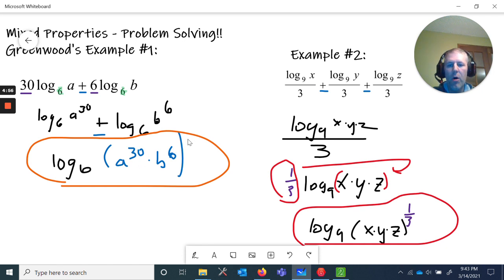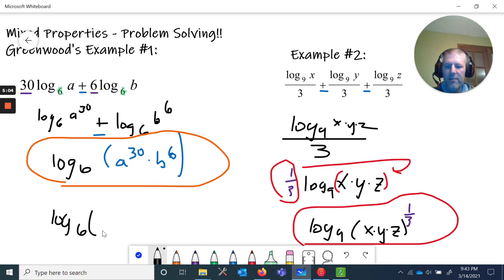We could even go farther and say we could pull a six out of here and a six here. We could say a to the fifth b all to the sixth power. That would totally work also. I know that six goes into thirty five times, so I can say this is a to the fifth b raised to the sixth power outside. That power rule of exponents would also apply here, so you could say this is an alternate answer, but this one is okay too. Both correct.